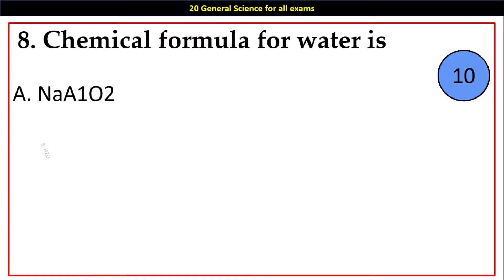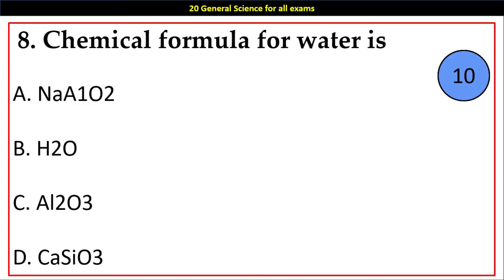Question number 8. Chemical formula for water is: Options A. NaAlO2, B. H2O, C. Al2O3, D. CaSiO3. Answer: B. H2O.